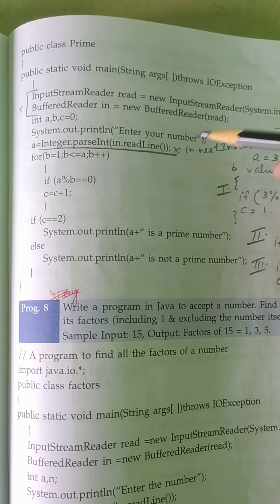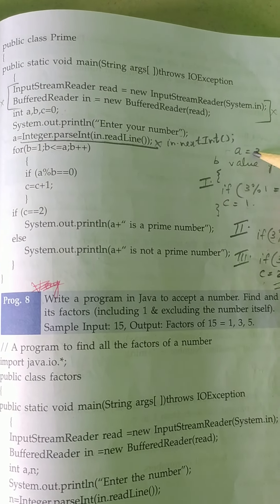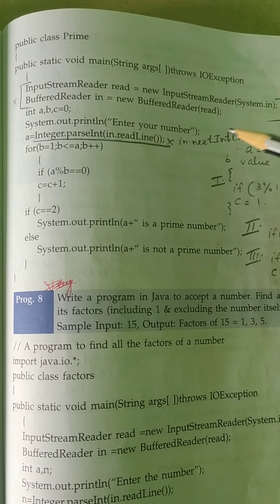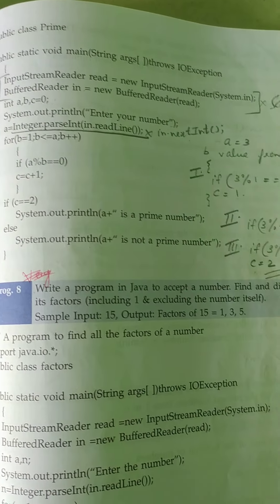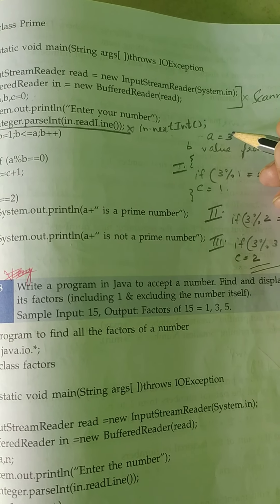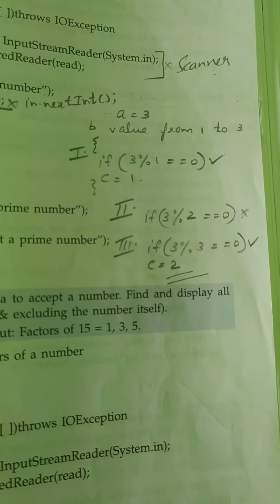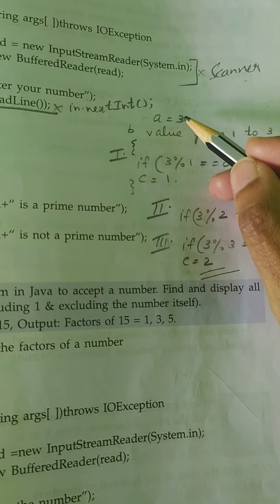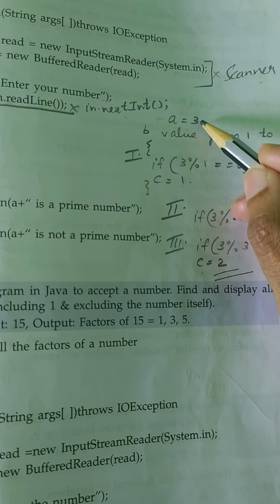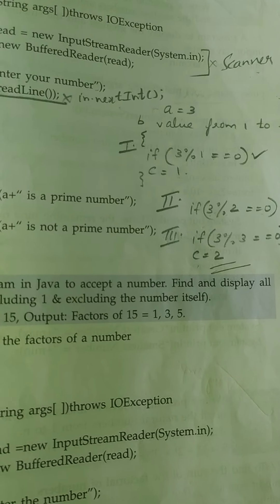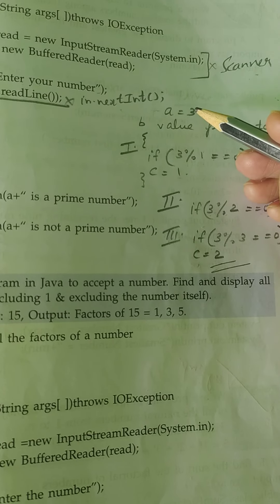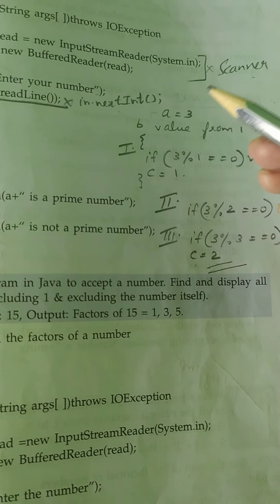I'm entering three and storing it in a variable. How to find the factors? If I'm accepting number three, from one to three I have to check each number whether it is divisible or not. For example, if I'm giving three, from one to three I have to check.